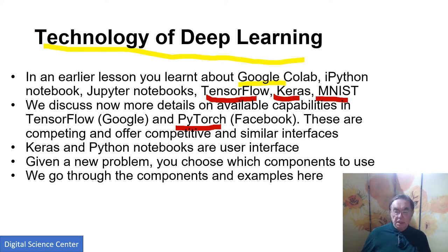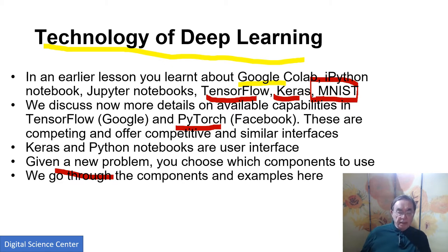MNIST is the NIST handwriting dataset. When we take a problem, we now need to go to Keras, TensorFlow, or PyTorch. Keras is effectively an interface to the components of TensorFlow, but they're all effectively Python interfaces. You just choose what you want to put together, and there's lots of flexibility — whenever I ask what's allowed, it ends up that everything's allowed.